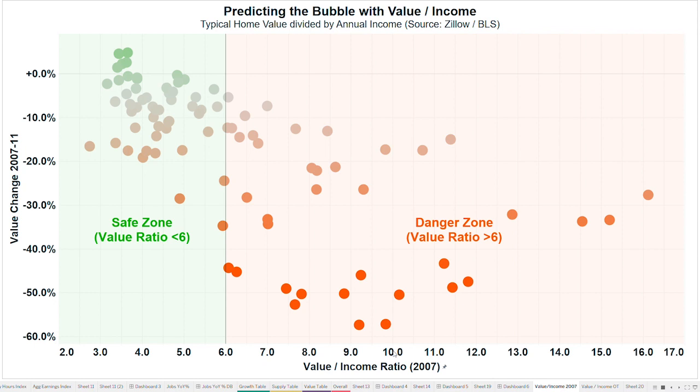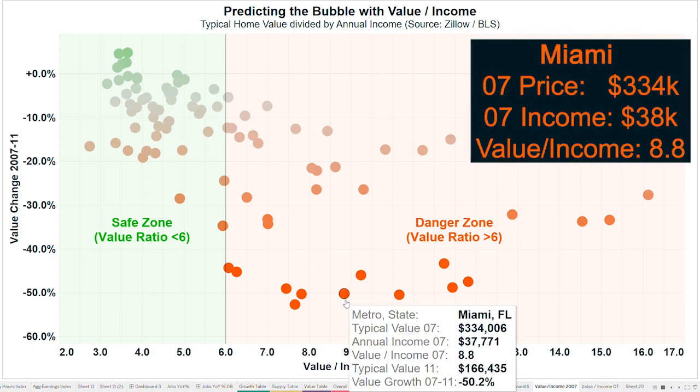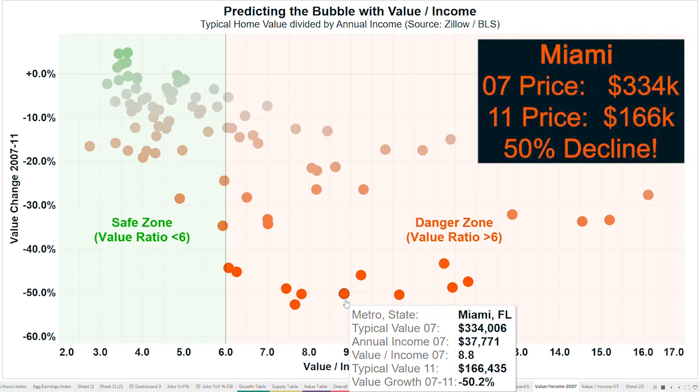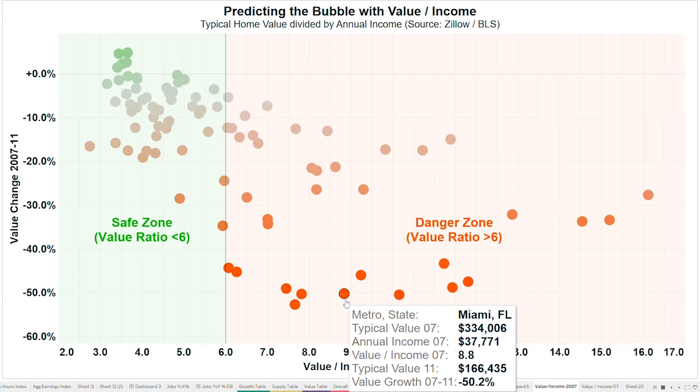Let's pick an example: Miami. Back in 2007, Miami's typical home price was $334,000 and the annual income for the average worker was $38,000. That's an 8.8 value-to-income ratio. What happened over the next four years? Home prices fell to $166,000 — a 50% decline. Homeowners in Miami lost 50% of their value from 2007 to 2011. Many got wiped out. One of the key reasons is that in 2007, values were extremely high relative to incomes at an 8.8 value-to-income ratio.